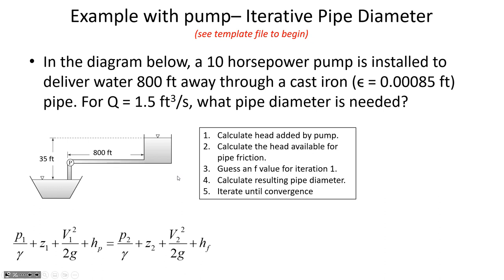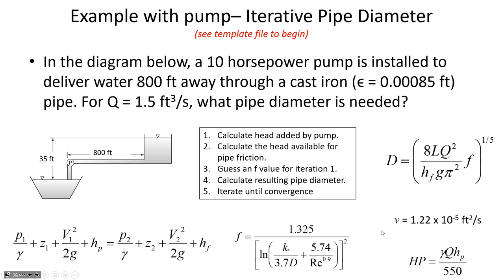H_p is the pump head — not horsepower, though it sounds similar. The relationship is: horsepower equals the unit weight of the fluid times the flow rate times the pump head divided by 550. This formula for horsepower is only applicable in traditional units. We have a 10-horsepower pump, so rearranging: H_p equals 550 ft·lbf/s per HP times horsepower, divided by unit weight times flow rate.